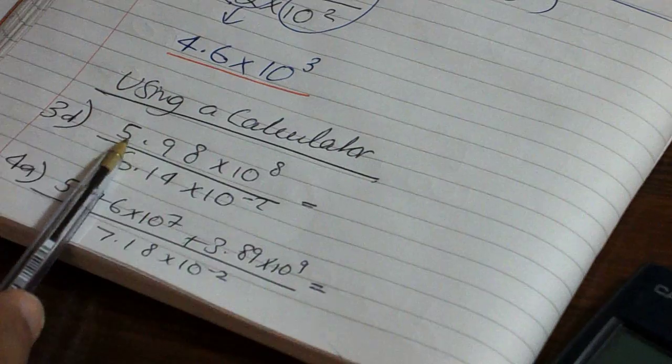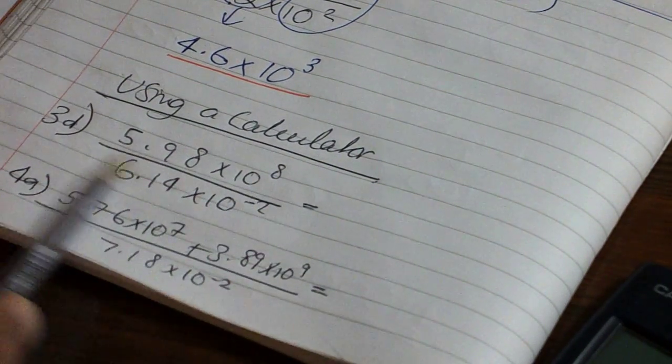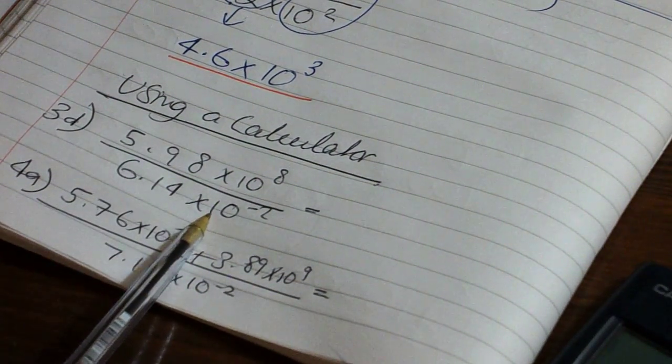this calculation here: 5.98 times 10 to the 8, divided by 6.14 times 10 to the minus 2.